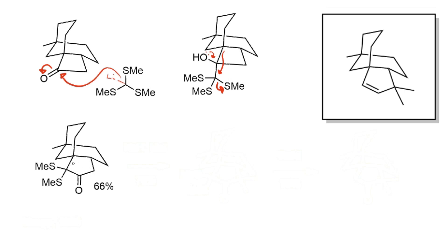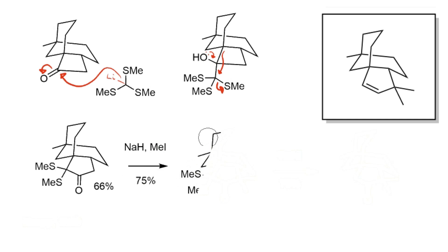The product is a masked 1,2-dicarbonyl — you have a carbonyl here and a latent carbonyl here, allowing exploitation of differential reactivity. This group also blocks one of the alpha positions of the carbonyl for enolization, which is important in the next step. Treatment of this intermediate with sodium hydride and methyl iodide gives dialkylation at this alpha position. So not only does the sulfur reagent drive ring expansion, it also blocks reactivity and directs the methyl groups where they're needed — a really elegant use of this reagent.